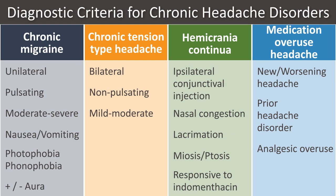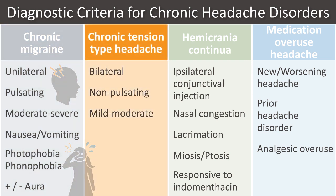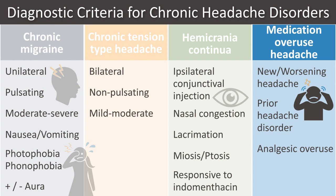Headache disorders are diagnosed based on history and neurologic exam. This table outlines the diagnostic criteria for the most common chronic headache disorders. Unilateral pulsating headaches, with or without aura, are chronic migraines, while milder non-pulsating bilateral headaches are chronic tension-type headaches. Conjunctival injection or nasal congestion ipsilateral to the headaches suggests hemicrania continua. New or worsening headaches in a patient with a pre-existing headache disorder and regular analgesic overuse suggests medication overuse headache.